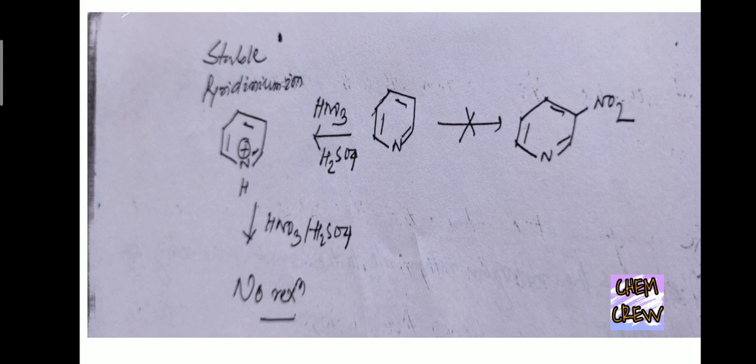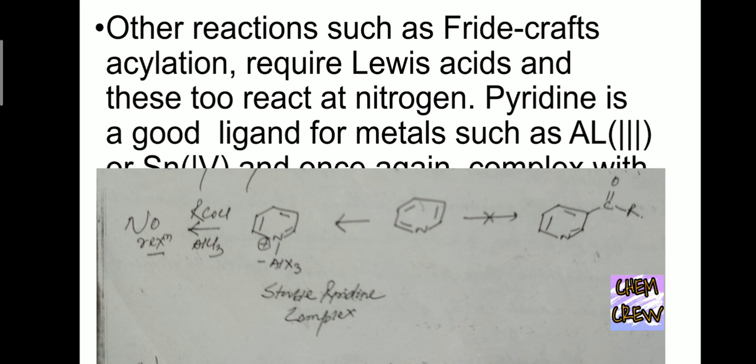Other reactions such as Friedel-Crafts acylation require Lewis acids, and these too react at nitrogen. Pyridine is a good ligand for metals such as AlCl3, and once it complexes with its cationic nitrogen it is completely unreactive towards electrophiles. Here pyridine can be stable as nitrogen plus and AlCl3. If we react with RCOCl and AlCl3 there will be no reaction.